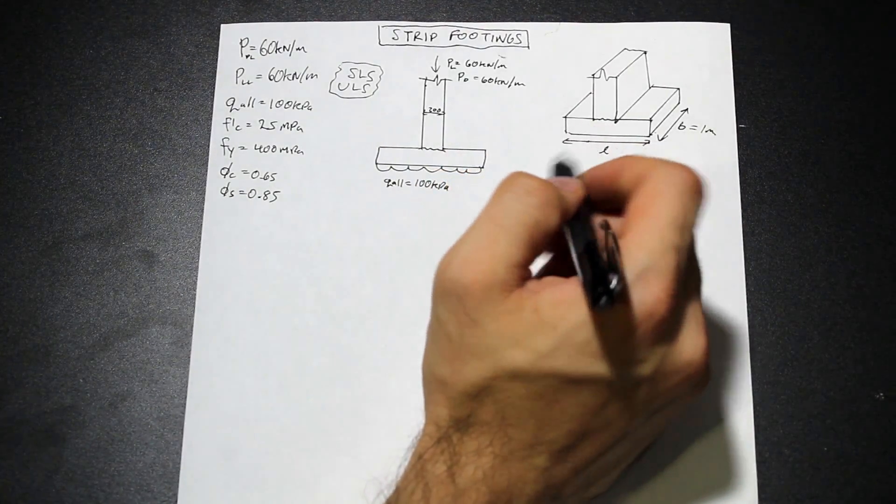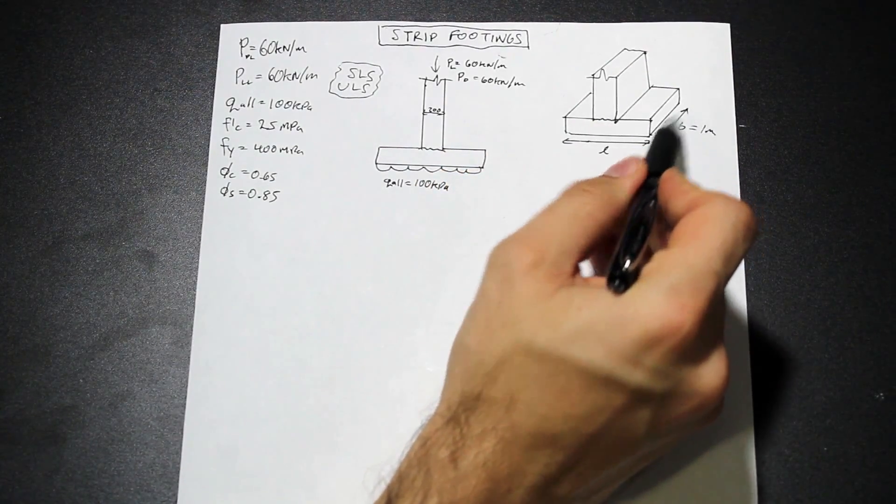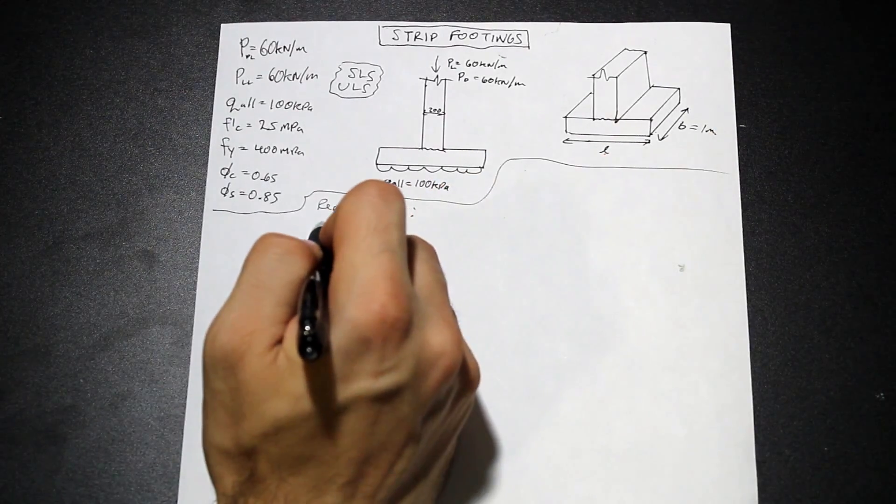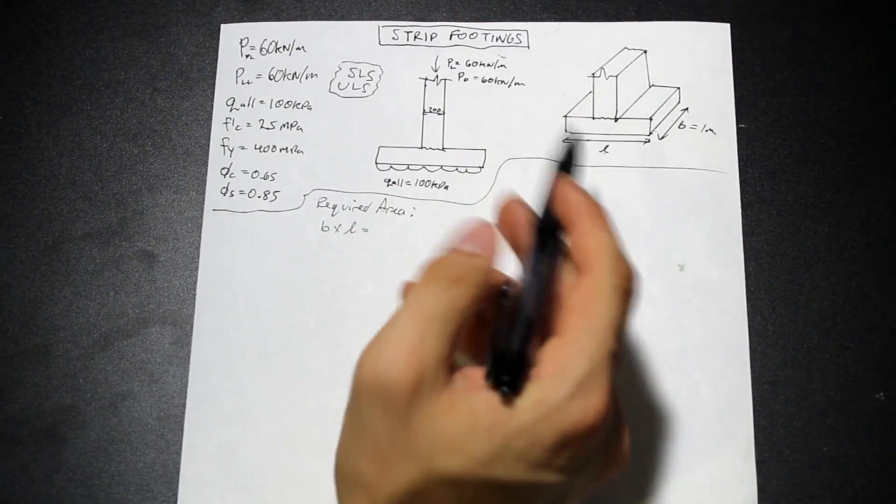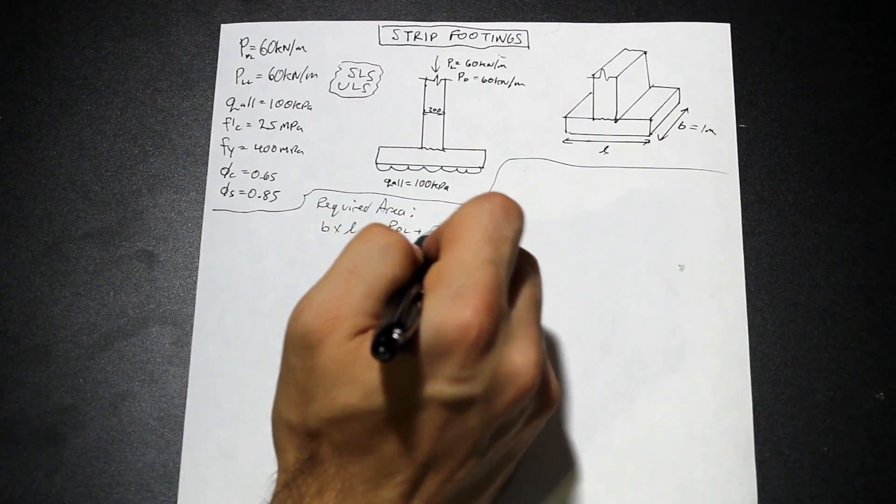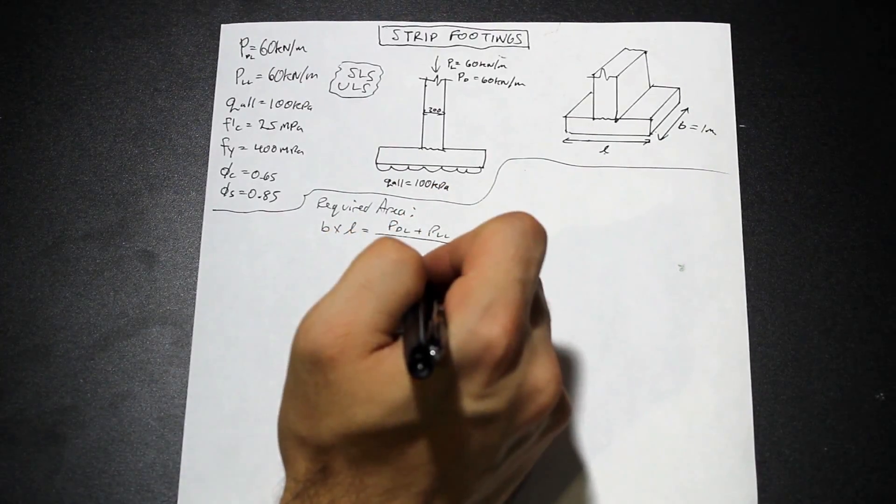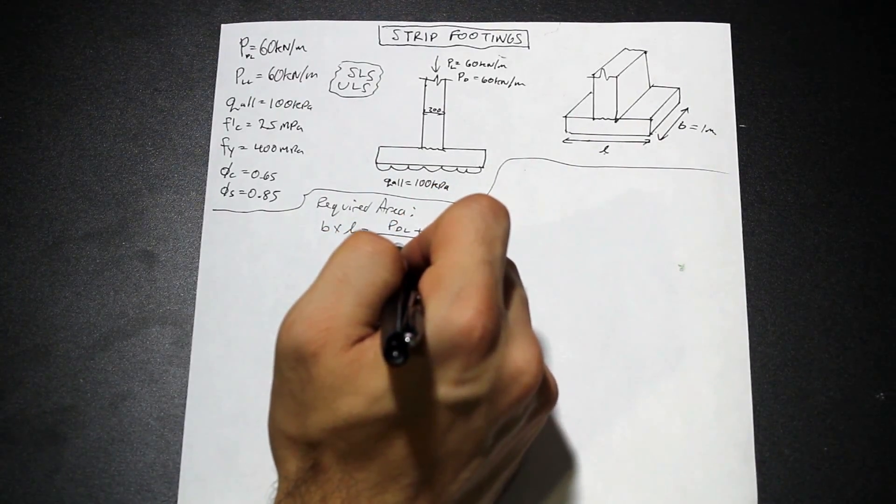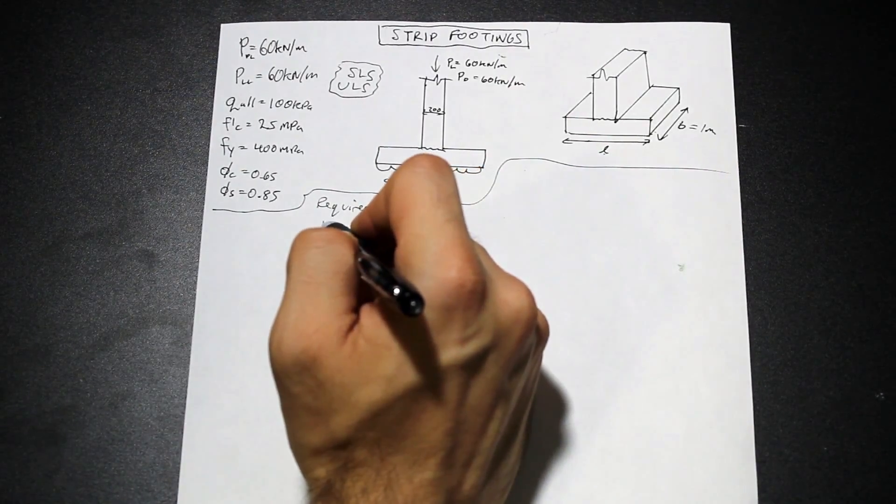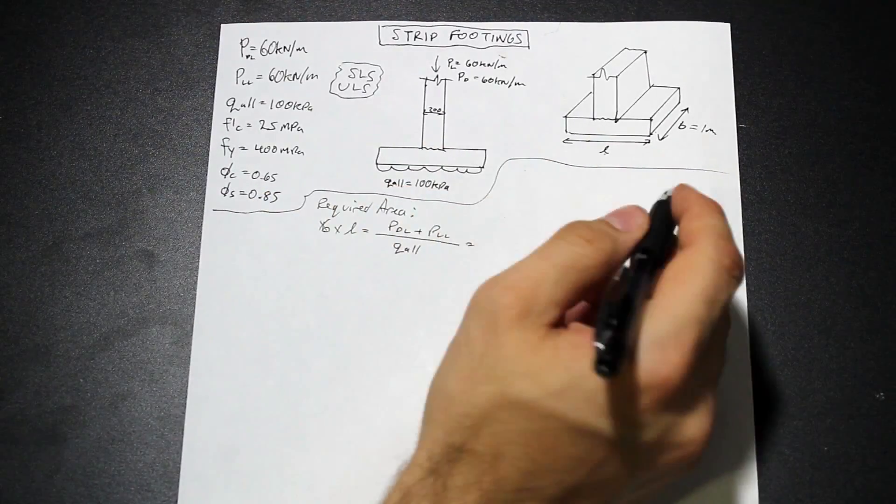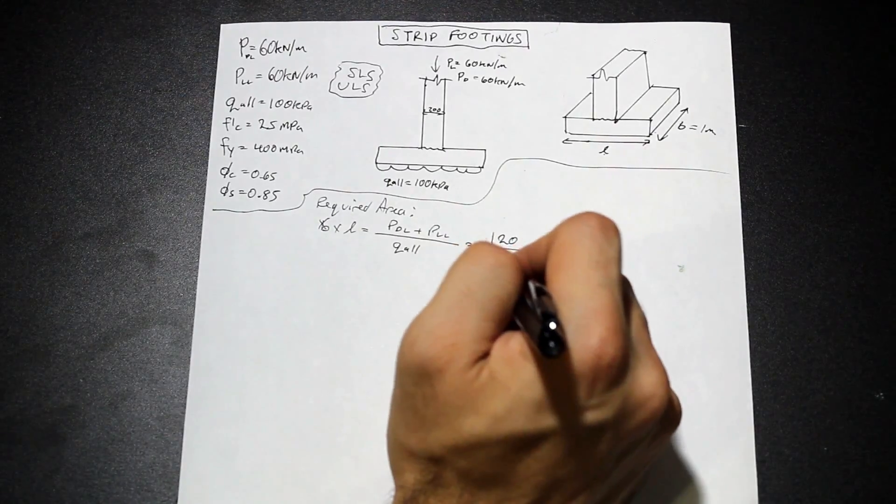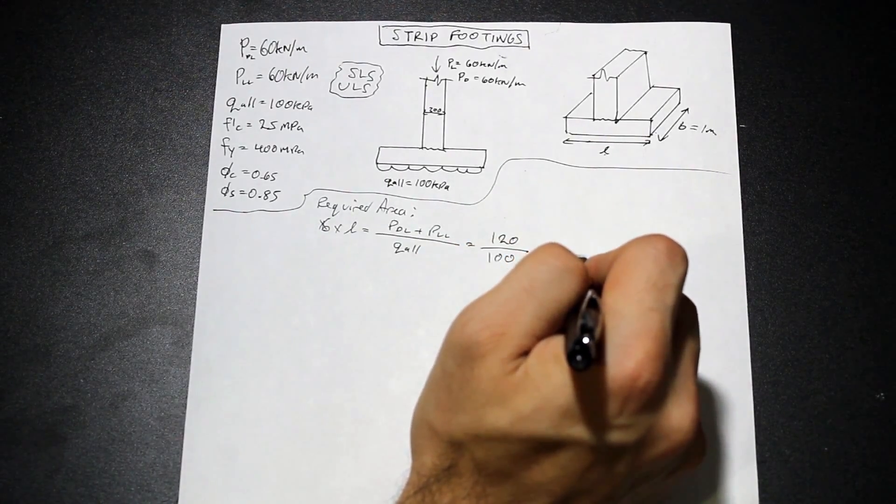So right away, we're going to find this dimension L. We already know B. So B times L, this area of this one meter strip, is going to be equal to our unfactored specified load. So we have our dead load plus our live load axial. And that's going to be divided by our allowable bearing capacity, our SLS bearing capacity. So this is one. That's fine, that goes away. And this is going to be 120 divided by 100. And that's going to give us 1.2 meters.